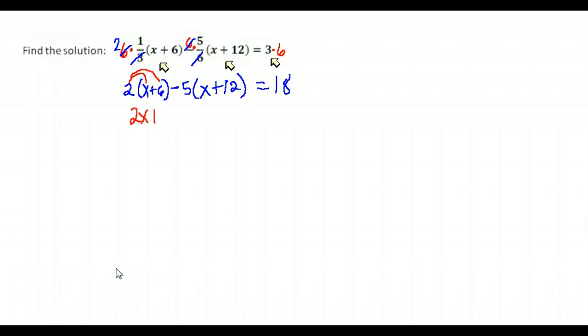2 times x gives me 2x, and 2 times 6 is 12. The second set of parentheses, negative 5 times x is a negative 5x, and negative 5 times 12 is a negative 60. Make sure you watch your signs there. It's easy to mess those up. We combine our like terms because we have x in more than one place on this left-hand side. A 2x and a negative 5x gives me a negative 3x, and a 12 and a negative 60. When I put those together, I get negative 48, still equal to 18.